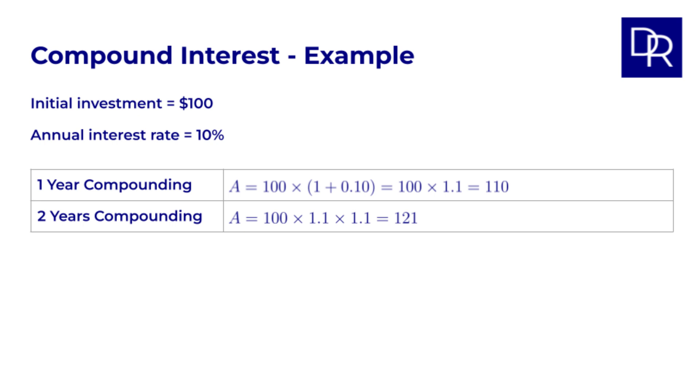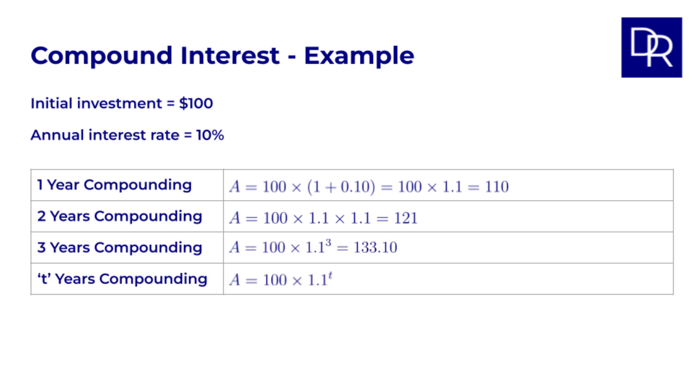If we invest for two years, we also get interest on the interest earned in the first year. This is the compounding effect. So A now equals 100 times 1.1 from the first year, and then another times 1.1, so we get 121. For three years, we get 100 times 1.1 to the power of 3. We can see a pattern here. For t years, the accumulated amount is 100 times 1.1 to the power of t.